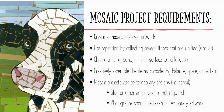Your mosaic project requirements are as follows. First, create a mosaic-inspired artwork like those shown in this presentation. Use repetition by collecting several items that are unified or similar. Choose a background or solid surface to build upon — for instance, a brown background of cardboard or construction paper. Creatively assemble all your items and consider balance, space, and/or pattern when you create. Mosaic projects can be temporary. Glue or other adhesives are not required, but photographs should be taken of any temporary artwork.